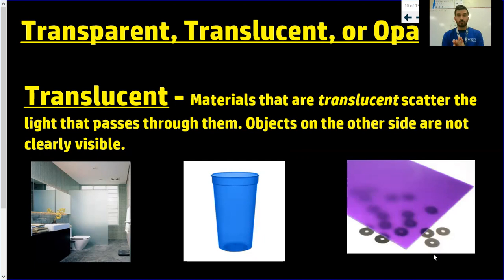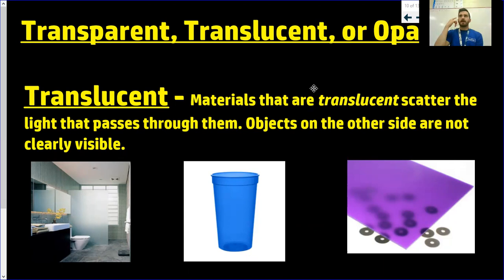Translucent is going to make the object on the other side look a little bit blurry. There is a perfect example of something that's translucent, but I'm saving it for the end because it'll make a lot of sense once I get to it. So you could probably make a logical guess here: transparent means all the light's going through, translucent means some of the light's going through — so opaque must mean what? Think about that.